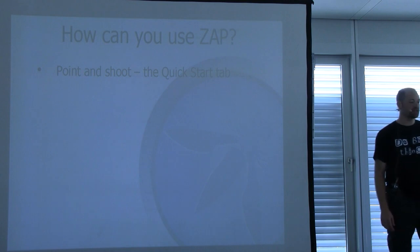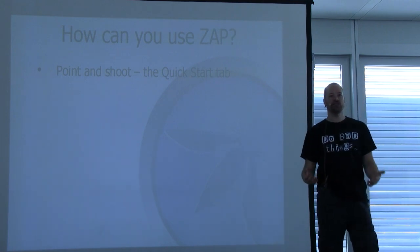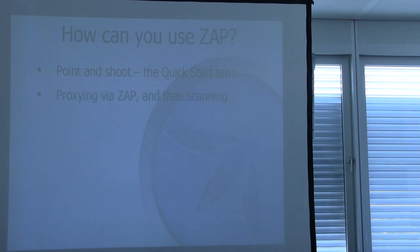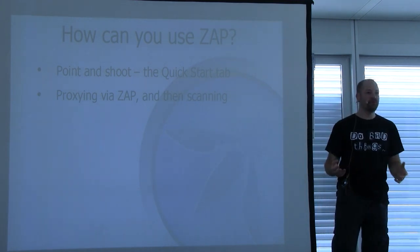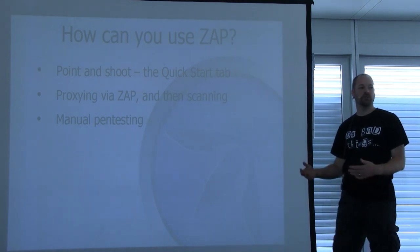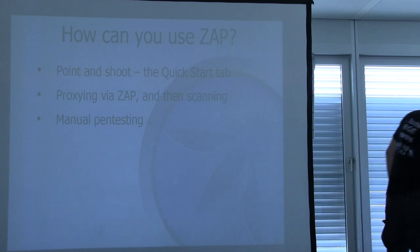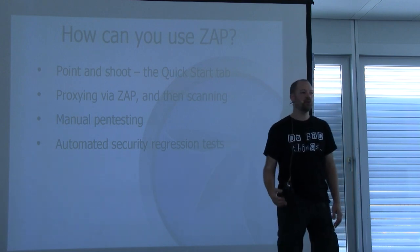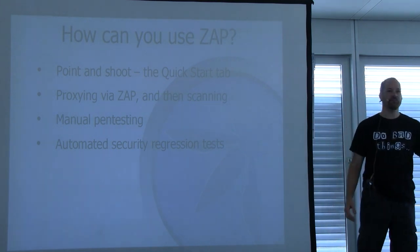There are different ways of using ZAP. We have a quick start option — just give it a URL and go. It's pretty effective for certain types of websites, but if you've got authentication it's not going to work. Then there's another option where you proxy your browser through ZAP, explore it manually, use the spiders, then do the scanning — that's more effective. And of course you've got full manual pen testing using some of the more advanced ZAP features. We've also got an API for automated security tests — at Mozilla we're integrating it with our QA process.